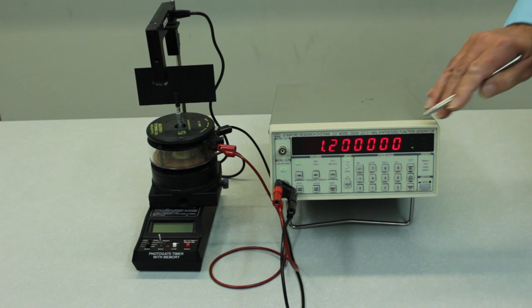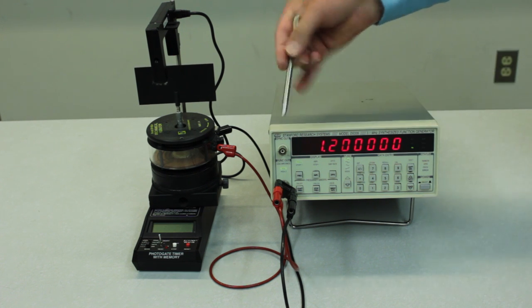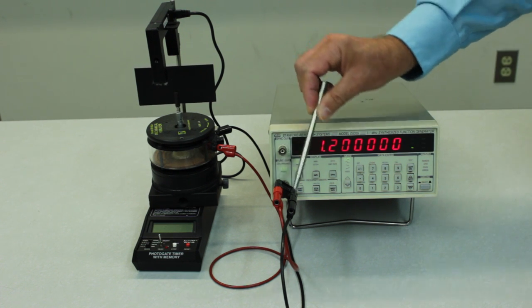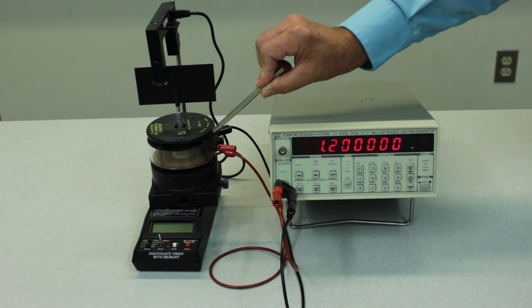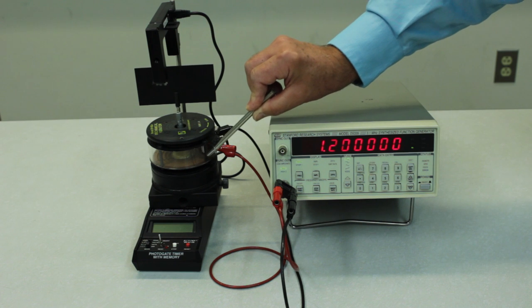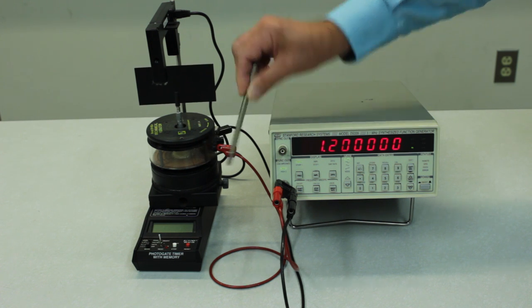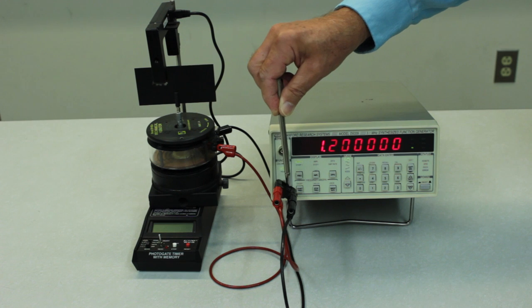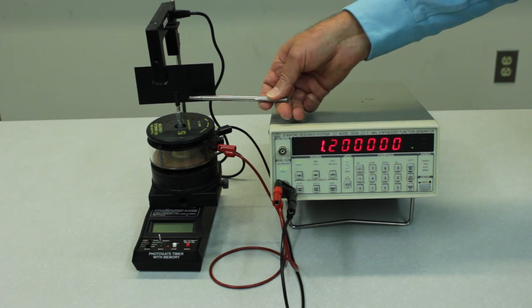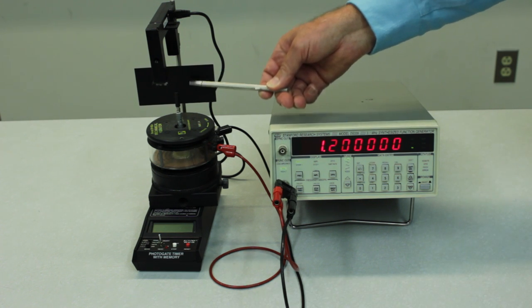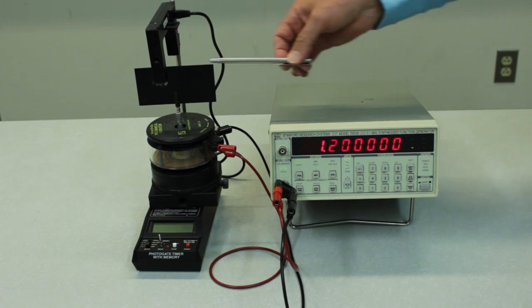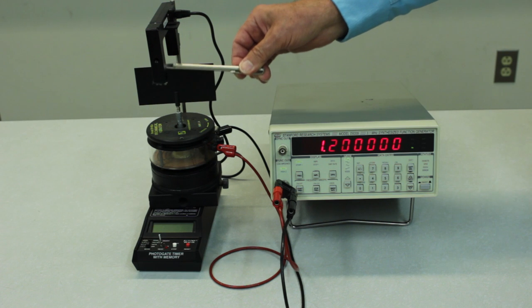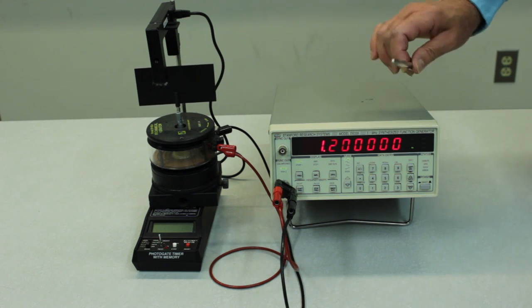Again, precise to a part in 10 to the sixth. Now what this does is to produce a sine wave, a varying voltage that drives this little mechanical speaker membrane. So the speaker membrane is forced up and down in response to the signal from the function generator. That in turn moves a little opaque flag up and down in the path of the photogate timer.